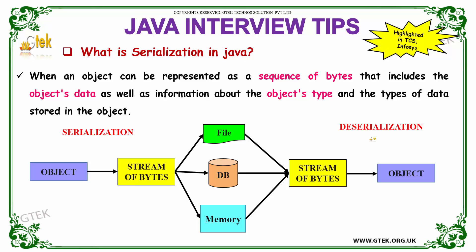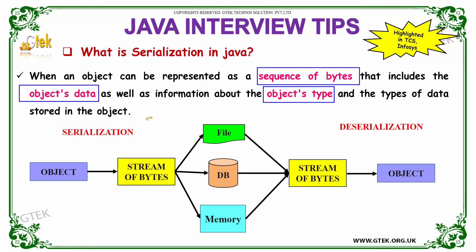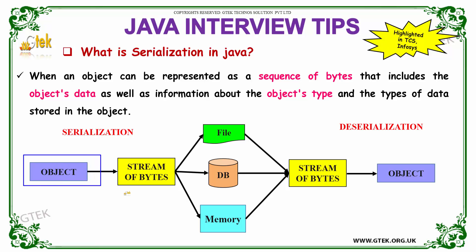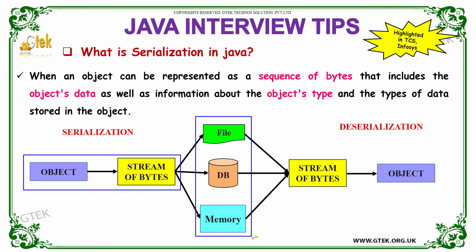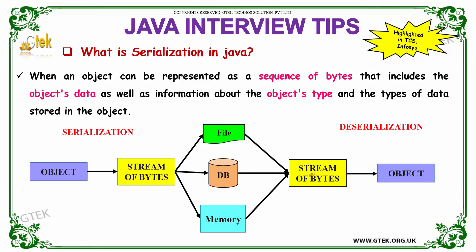What is serialization in Java? When an object can be represented as a sequence of bytes — which includes the object's data, information about the object's type, and the types of data stored in the object — this is known as serialization. The byte sequence can be a stream of bytes and is further processed and stored in a file, DB, or memory.